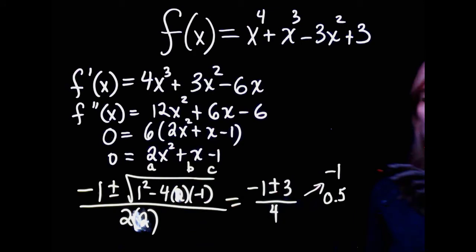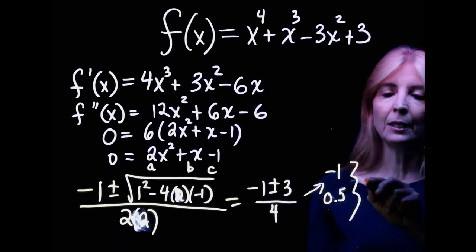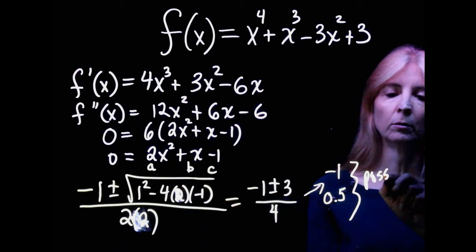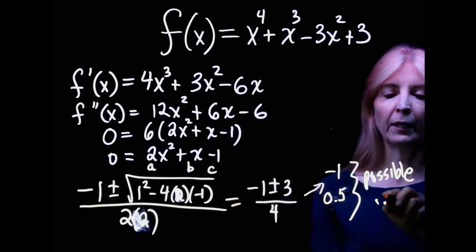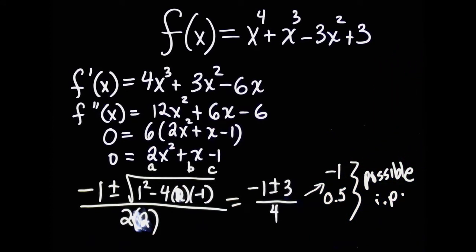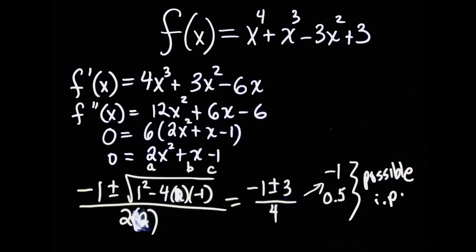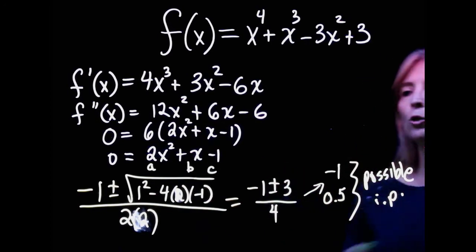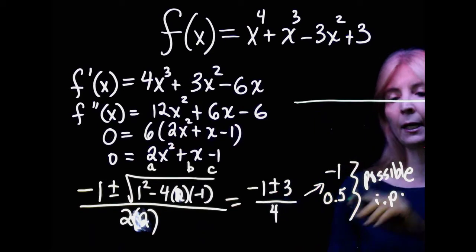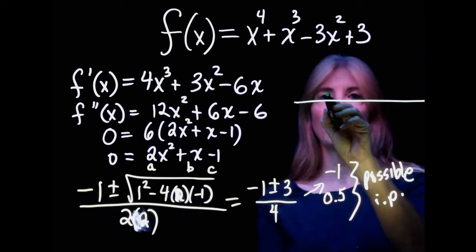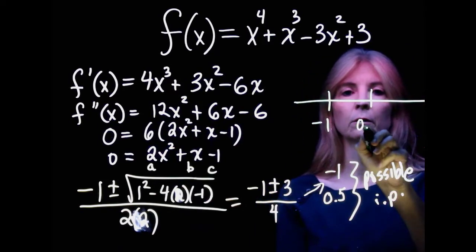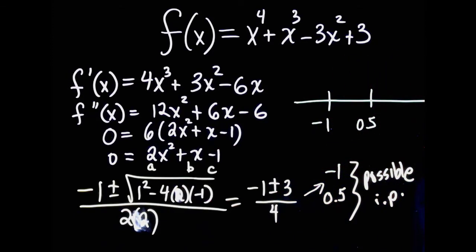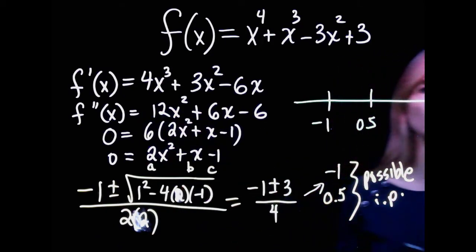Alright, so these are, this is the key. These are possible inflection points, and that is key. They are not necessarily 100% inflection points. What you have to do is then, I set up a number line, and I put my inflection points here, so you can see them there.